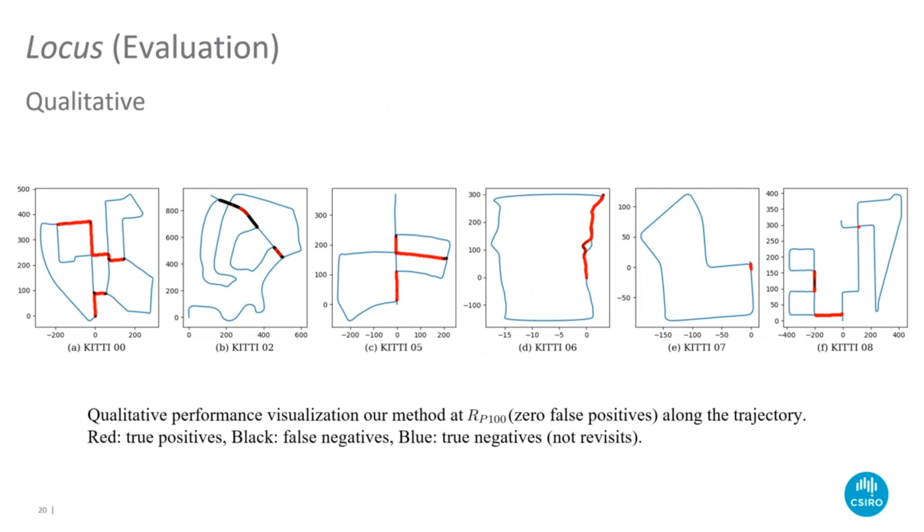The qualitative performance visualization of our method at the RP100 threshold shows that our method can retrieve true positives throughout a variety of environments and revisit types.